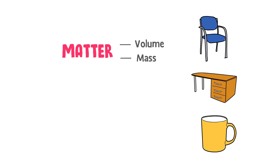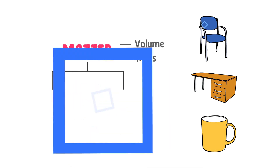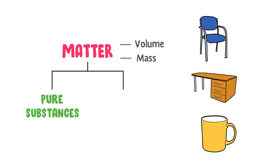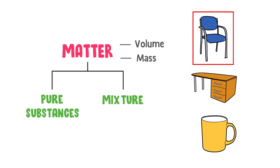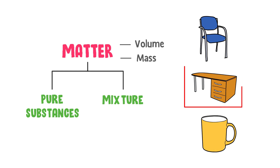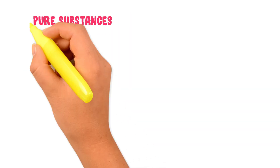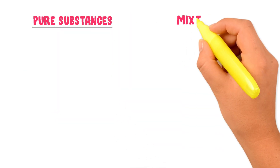Matter is divided into two groups: pure substances and mixtures. This means that a chair may be either a pure substance or a mixture. Similarly, a desk may be either a pure substance or a mixture.